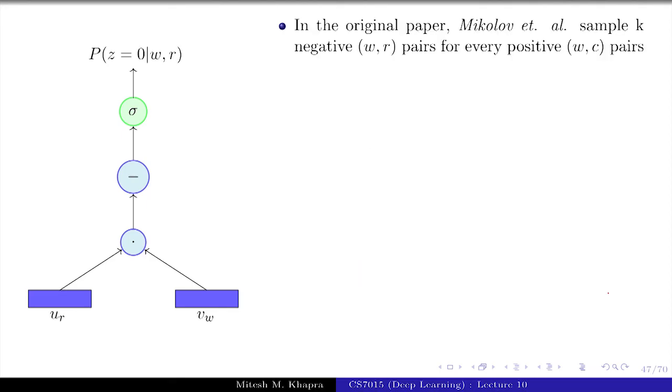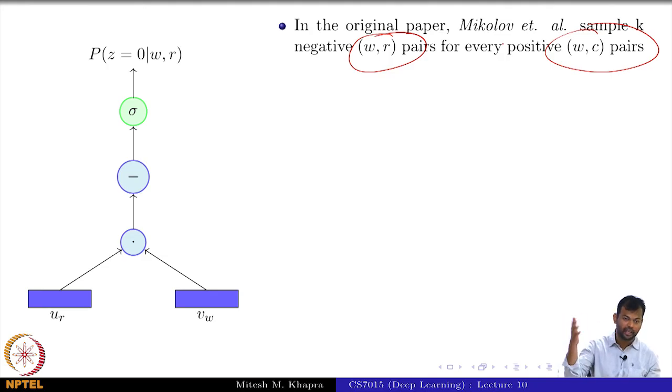That is what the skip gram model does. And in the original paper, Mikolov et al. sample k negative (w,r) pairs for every positive (w,c) pair, right? That means if your size of D was n, what would the size of D' be? K into n. They had that many positive examples and k times that number of negative examples, and this was a hyper parameter which was tuned. They used a value of k such that it gave them the best results.